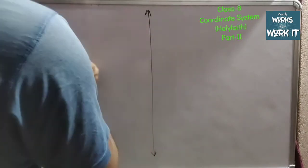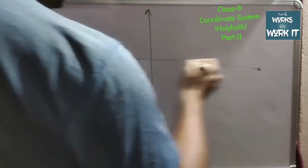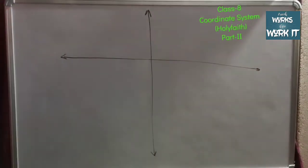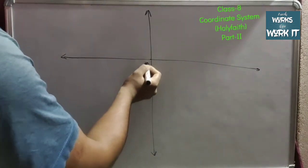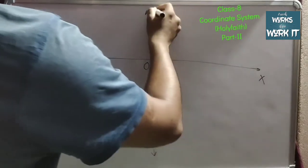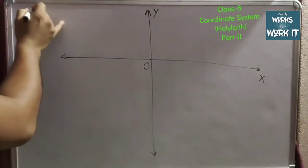We will take a few examples in order to plot the points in the Cartesian plane or coordinate axis. So this is our point O, this is x-axis and this is y-axis. Suppose I am taking two examples.